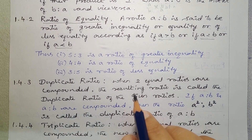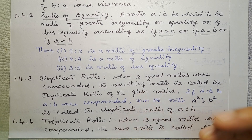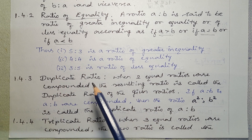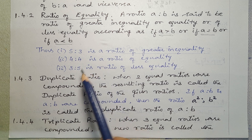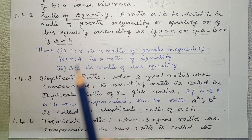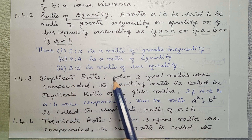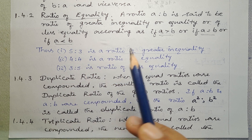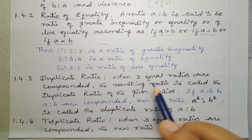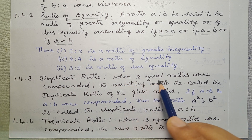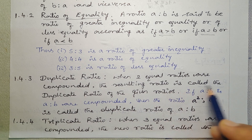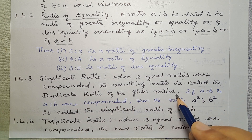Next, Sub-Article — Duplicate Ratio. The ratio is called the duplicate ratio of the given ratios when two equal ratios are compounded together.